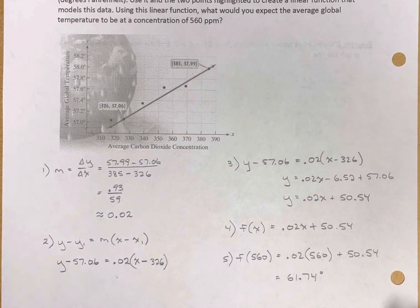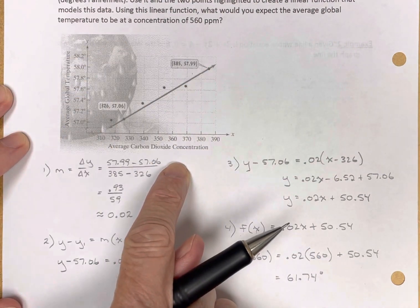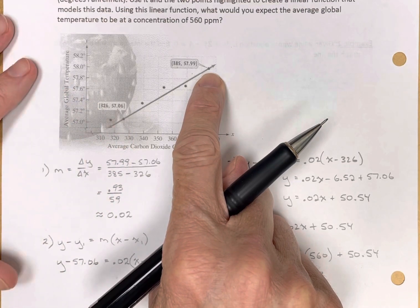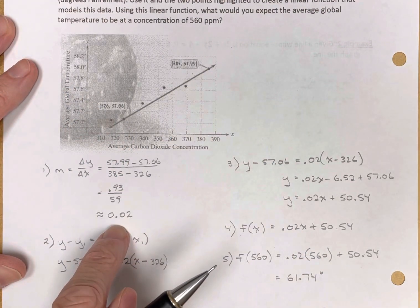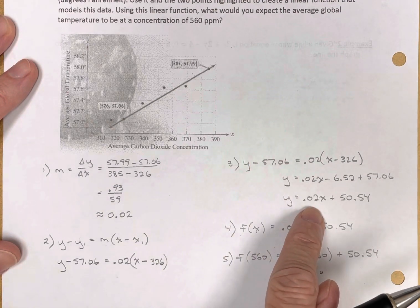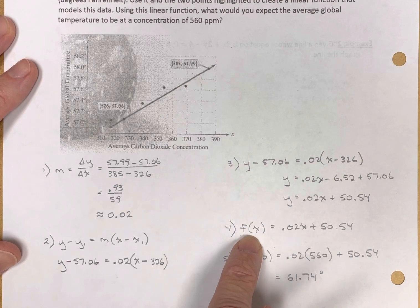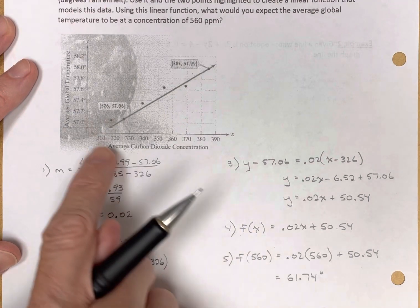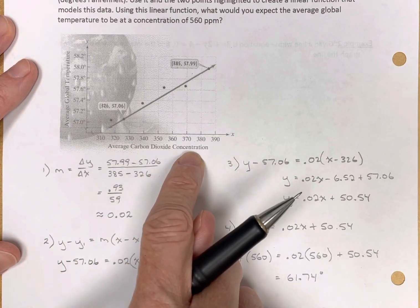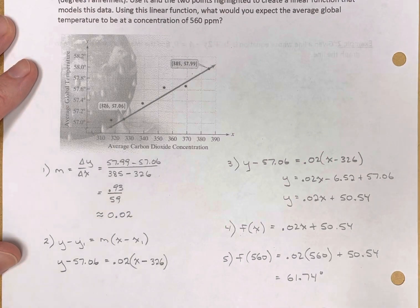As you're looking at a realistic situation like this one, and you know a couple of points, well, it's fairly simple to come up with a slope, put it in point-slope form, rewrite it in slope-intercept form, and then rewrite it as a function. And now you can answer lots of questions regarding what value, the average carbon dioxide concentration value gives me what average global temperature.